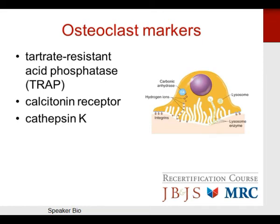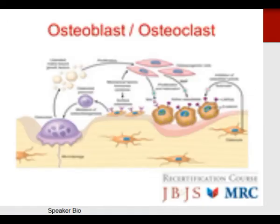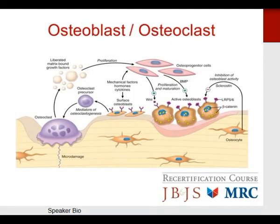Osteoclast markers include tartrate-resistant acid phosphatase, calcitonin receptor, and cathepsin K. Denosumab is a pharmacological medication which inhibits RANK ligand, used for osteoporosis because it blocks RANK ligand's effect on the osteoclast. The osteoblast-osteoclast interplay is very important for bone turnover and bone mass regulation.